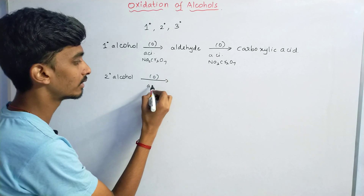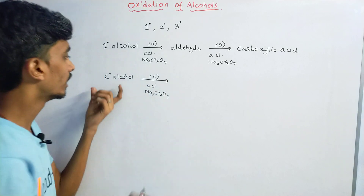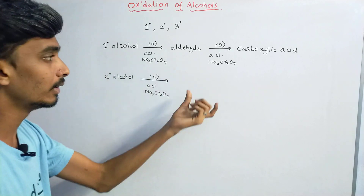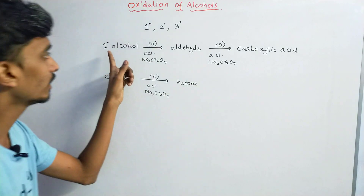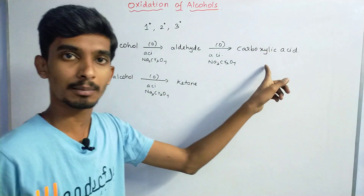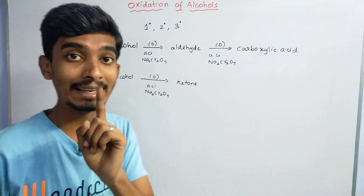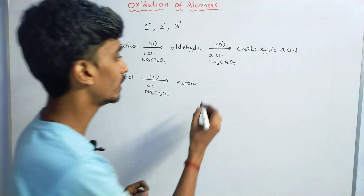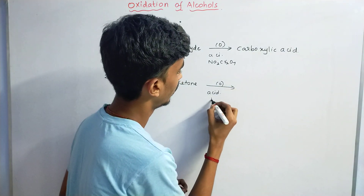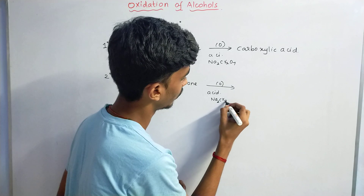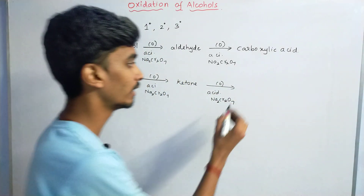For secondary alcohol, in the presence of acidified sodium dichromate, secondary alcohol is converted into a ketone. So primary alcohol gives aldehyde and then carboxylic acid, while secondary alcohol gives a ketone.